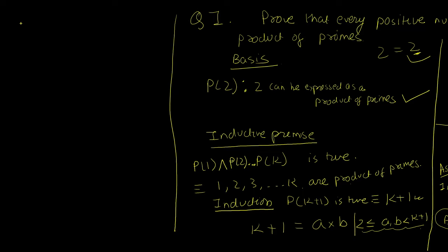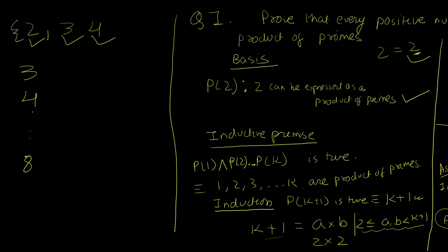Let me demonstrate with an example: 2 is already prime. For 3, it's prime so it's proven. For 4, it's composite: 4 = 2×2, and we've already proven 2 is a product of primes, so 4 is also a product of primes. For 8 = 2×4, we've already proven both 2 and 4. If this were normal induction, knowing only that 7 is a product of primes wouldn't help prove 8.